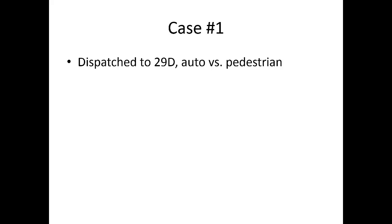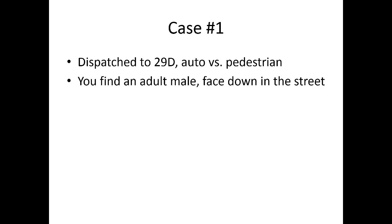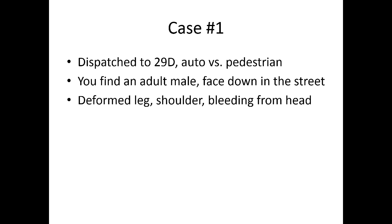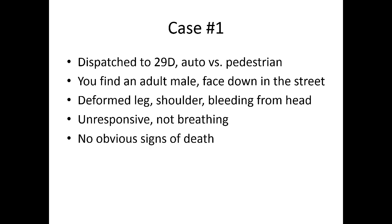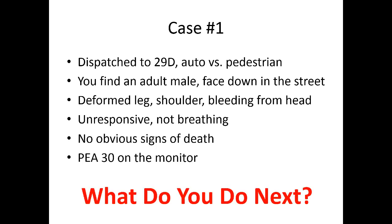Case number one: you're dispatched to a 29 Delta, an auto versus pedestrian. You find an adult male lying face down in the street, not moving, unconscious and unresponsive. You see a deformed leg and shoulder, and he's bleeding from his head. You don't see any breathing and he's unresponsive, but there's no obvious signs of death. You put him on the monitor and you see a PEA of 30. Think about what you would do next.